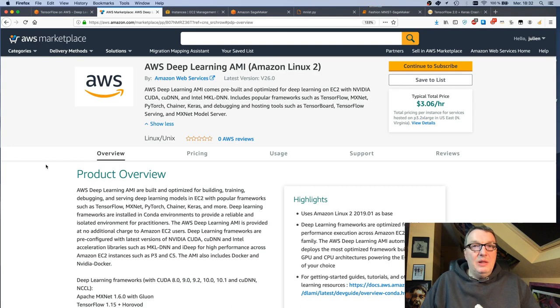And yes, it's pronounced AMIs, not amis. Don't get me started. Anyway, if you go to AWS Marketplace, you'll find different AMIs already packaged. So the one you want to use if you want to use TensorFlow 2.0 is version 26 or later.